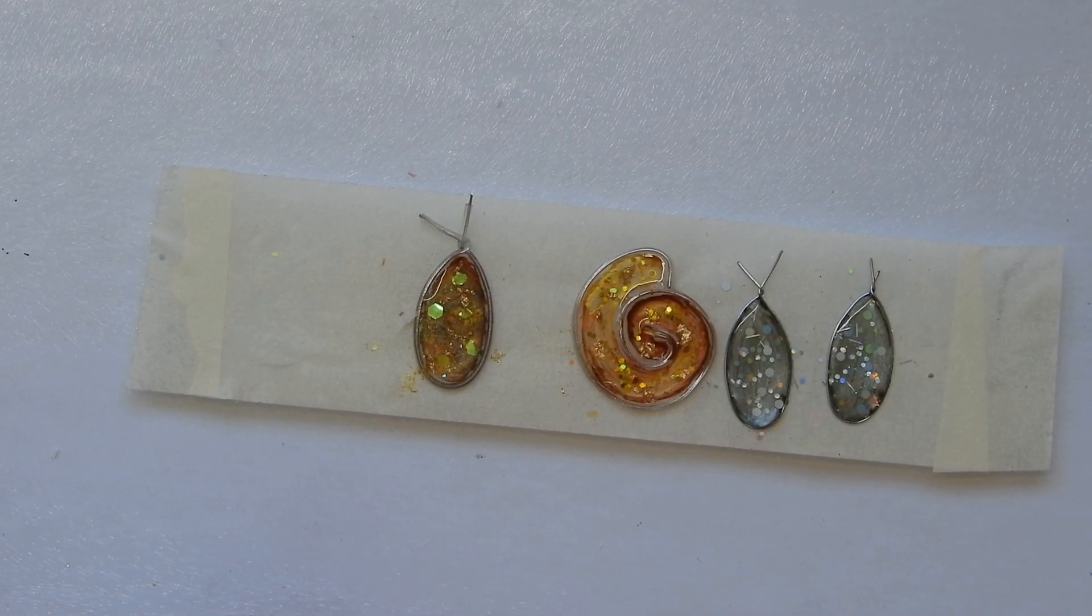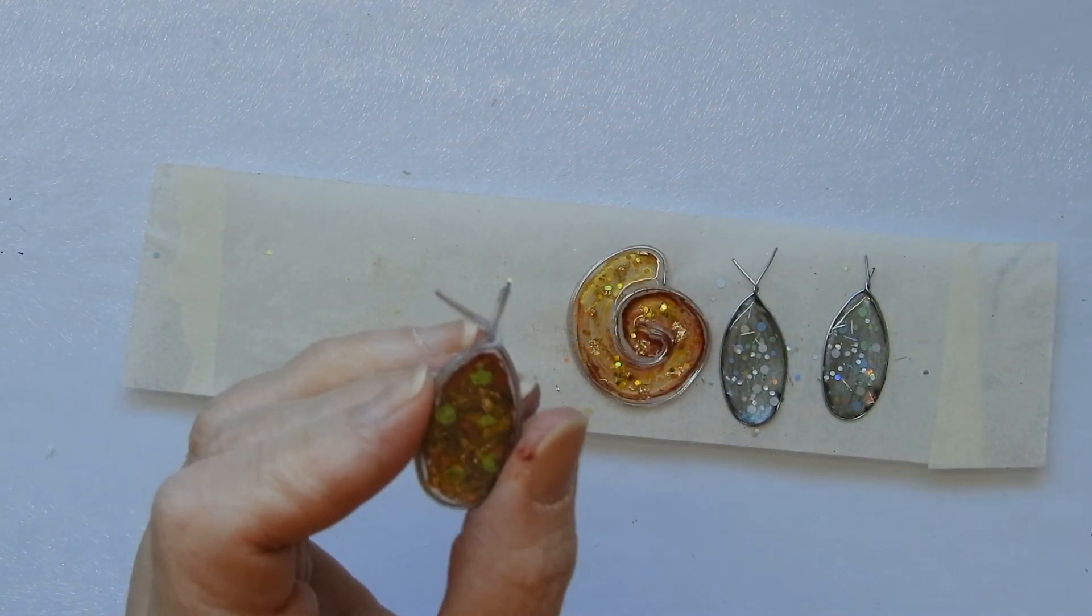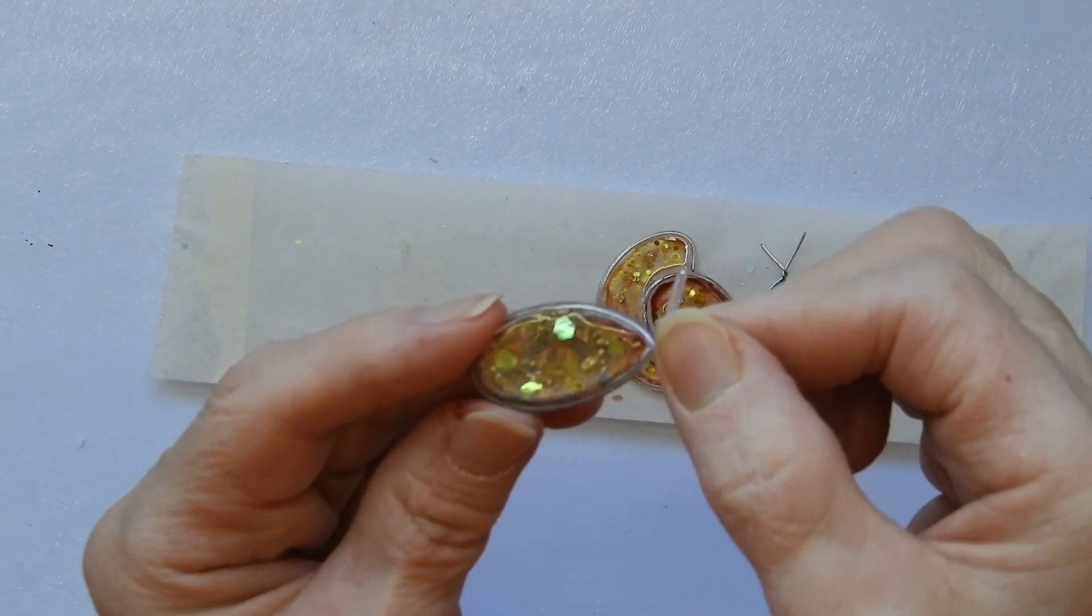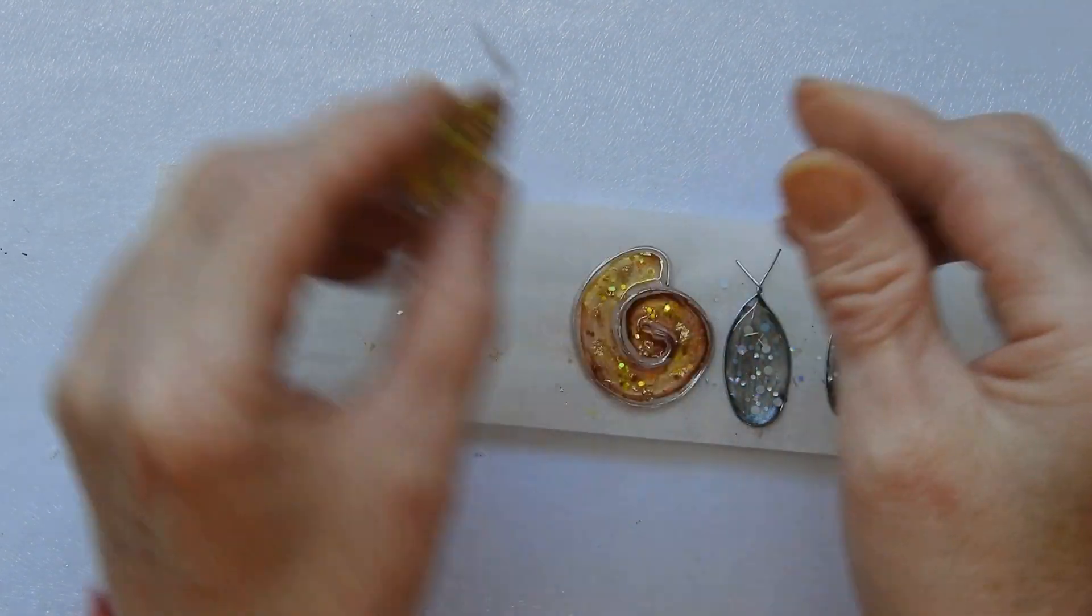Here is what I've ended up with. I can resin the back if I want to make it shiny, but I can trim off the little pieces here, and then I can put a jewelry finding on the back of it. And that would make quite a nice little pendant.